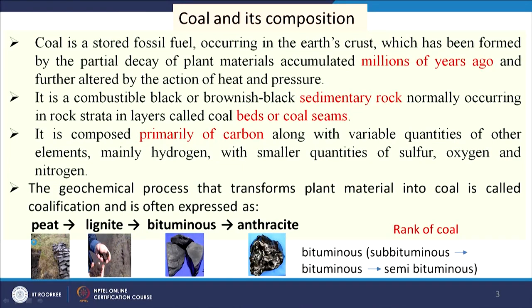Coal is a solid fossil fuel available under the earth's crust, and it has originated from plant bodies. The plant body was partially decomposed and converted to coal through geological actions at high temperature and pressure over millions of years. It is a black or brownish sedimentary rock, normally occurring in rock strata in layers called coal beds or coal seams. It is composed of carbon along with hydrogen and some amount of other elements like nitrogen, sulfur, etc.